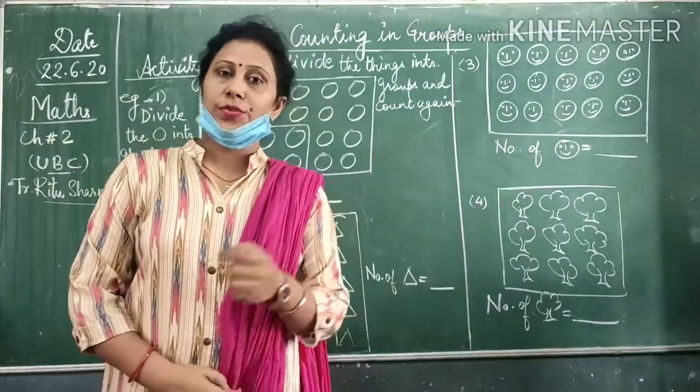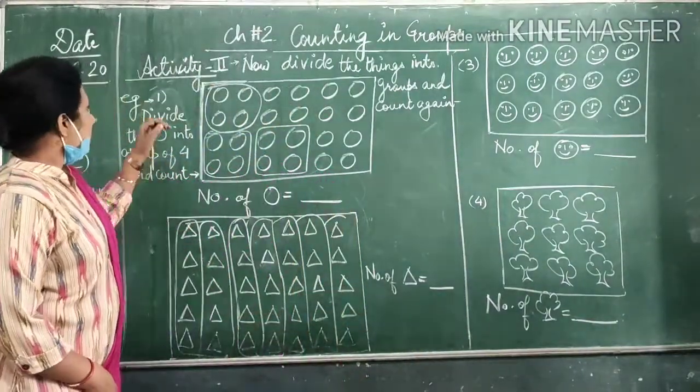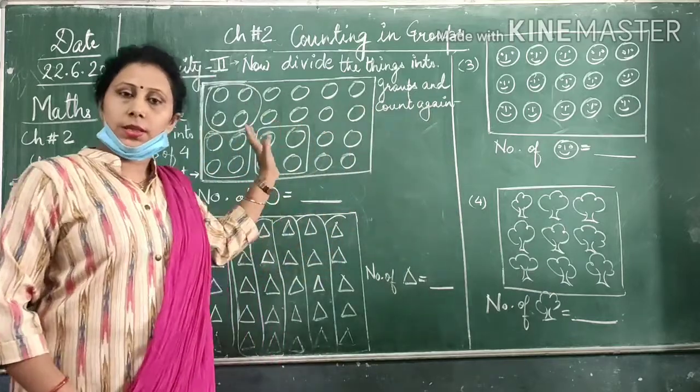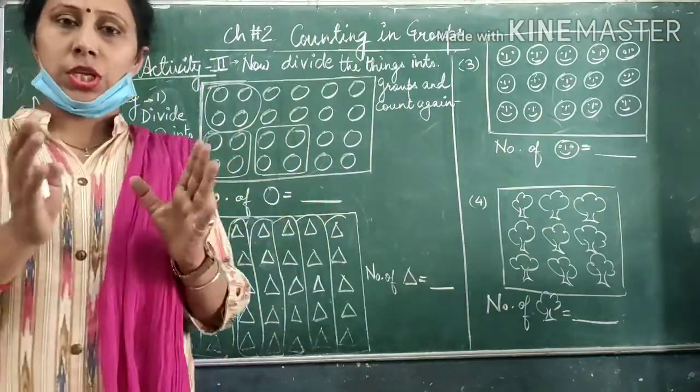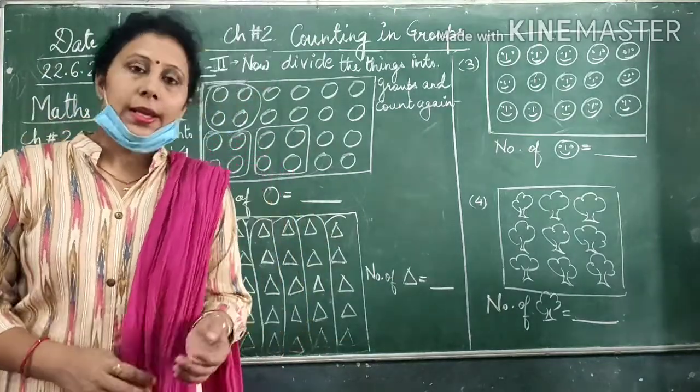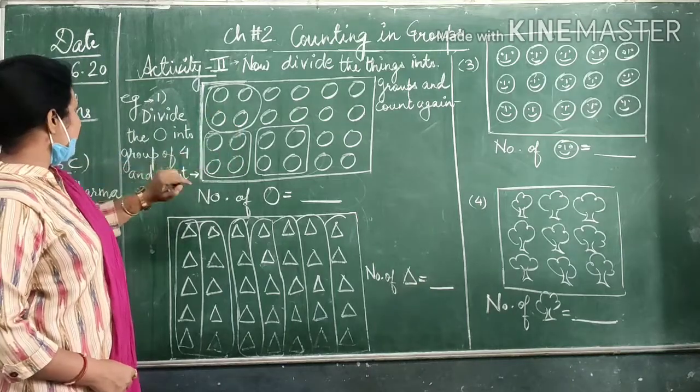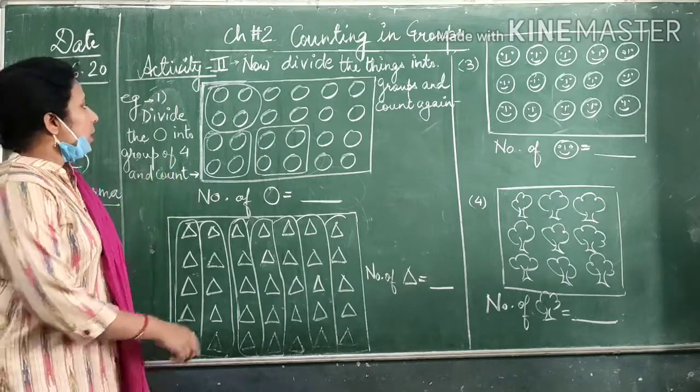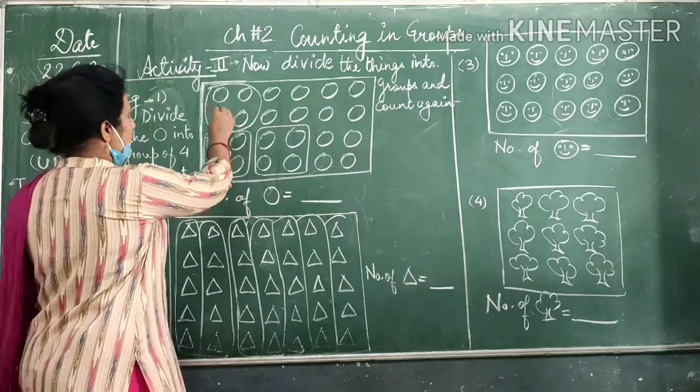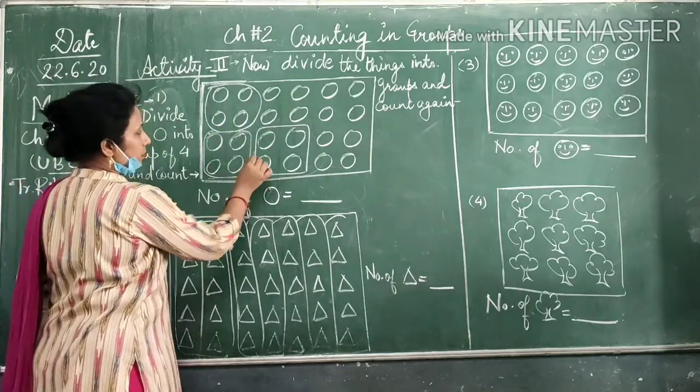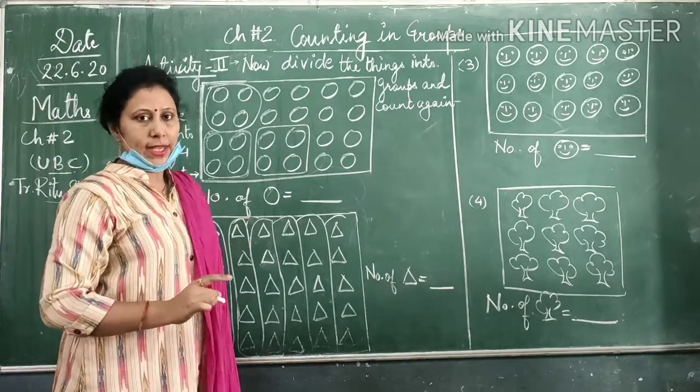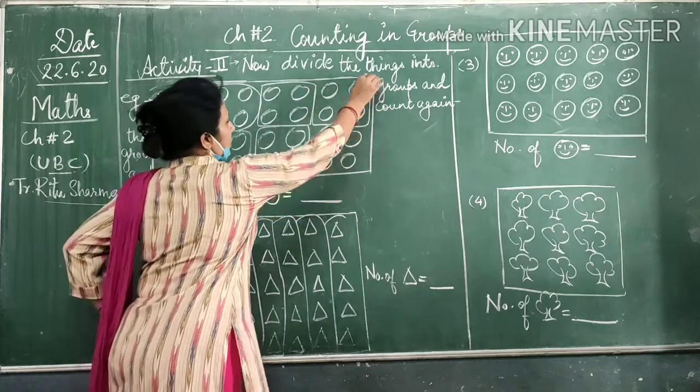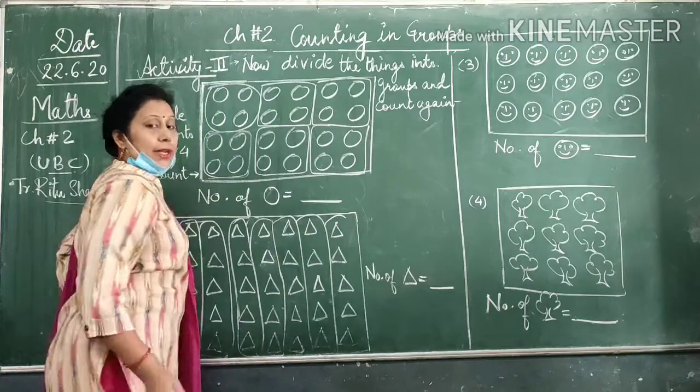Now we will do the second activity. What we have to do is again divide the things into groups and then count them. We have to divide the circles and the triangles into some groups. For example, first we have taken divide the circles into group of four and count. You have to divide all the circles into group of four. Let's see how we have done. I would write this in a row of four.